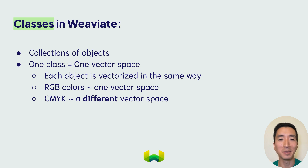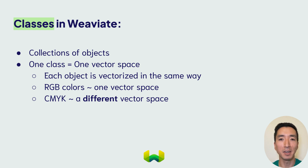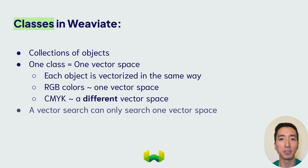So when you're designing your data schema in Weaviate, it's important to group objects that you want to search together in the same class, since vector searches can only be performed within a single vector space.